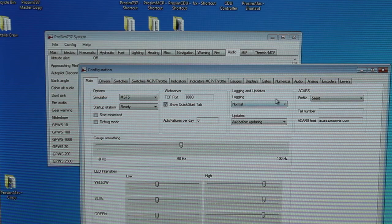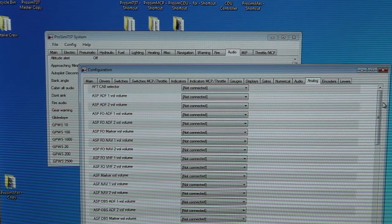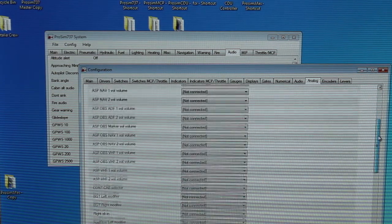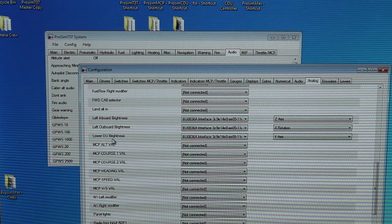You go into the configuration menu, and from the configuration menu you go into analogues. Here are all of the options you have for any analog component within your MIP.